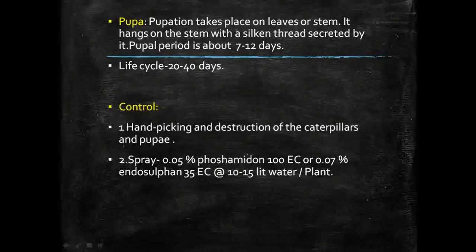The complete lifecycle is finished within twenty to forty days, and the pest is active mostly from March to November. Control measures include handpicking of larvae and pupae from infested plant parts, and spraying 0.05% phosphomedon or 0.07% endosulfan at 10 to 15 liters of water per plant to control the pest attack.